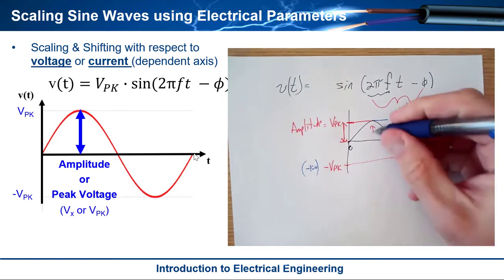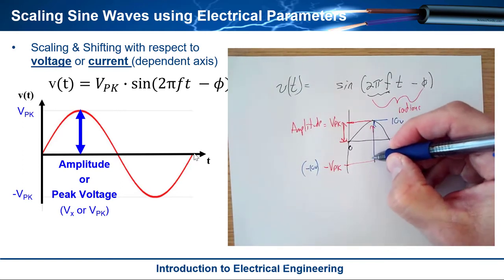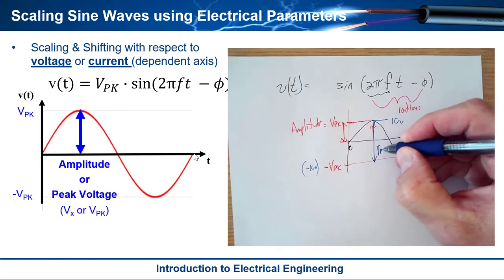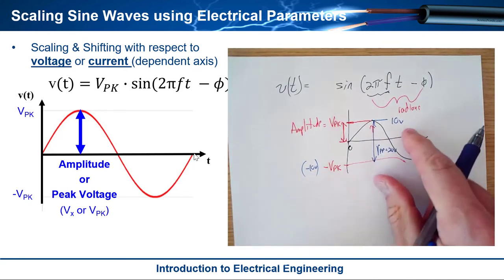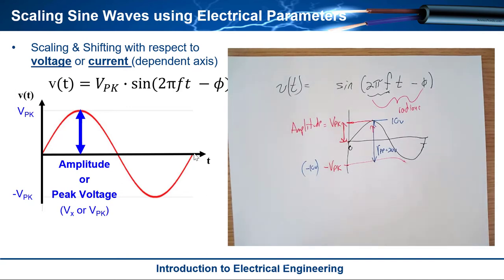Okay and if you wanted to ever capture that you could say that the v_pk-pk is equal to 20 volts. Okay so peak to peak is simply two times the amplitude.